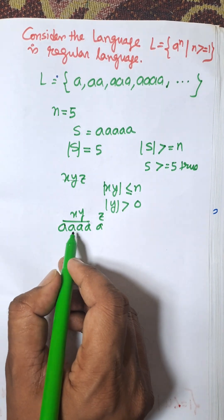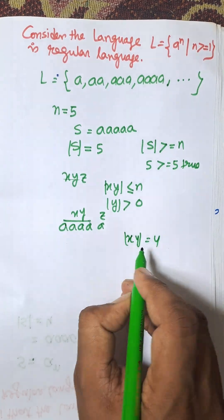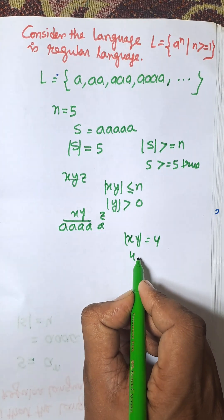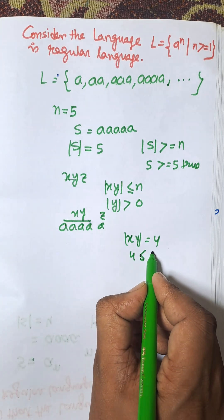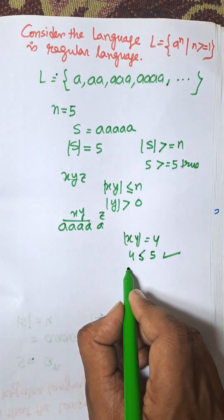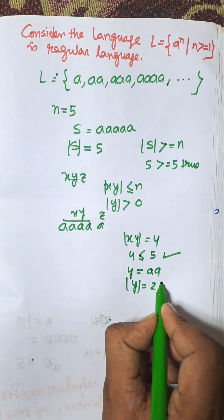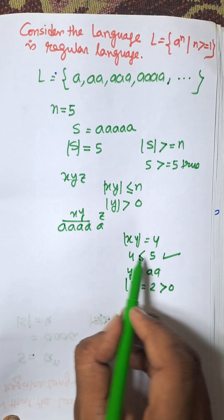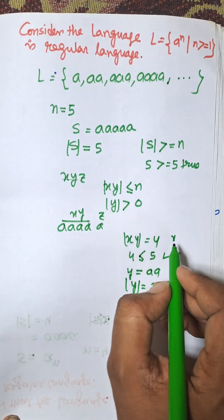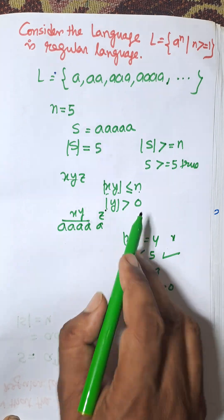Now length of xy is equal to 4, which is less than or equal to n. n is 5, so this is satisfied. Considering y is double a, |y| = 2, which is greater than 0. According to pumping lemma, |xy| ≤ n and |y| > 0. Here both are satisfied.